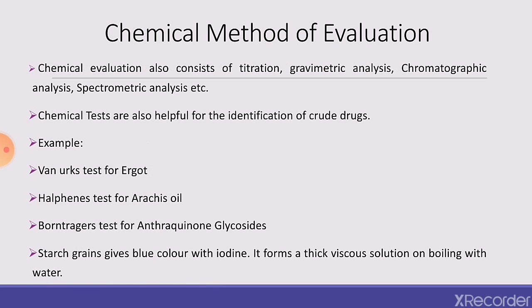Conventional titrimetric estimations are applicable to estimation of alkaloids from crude drugs, ester and aldehyde contents of volatile oils, and gravimetric methods are used. Chemical tests also help in proper identification of varieties of crude drugs. For example, Van Muk test is used for ergot, Halphen's test is used for arachis oil, and Brontiger test is used for anthraquinone glycosides. Solutions of lead acetate or lead sub-acetate are used specifically for chemical entities of gums. Alkaloid-containing drugs such as Rauwolfia, Belladonna, Ergot, Ipecacuanha, and glycoside-bearing drugs like Senna, Digitalis, Quill, and Strophanthus can be identified with the help of specific chemical tests.